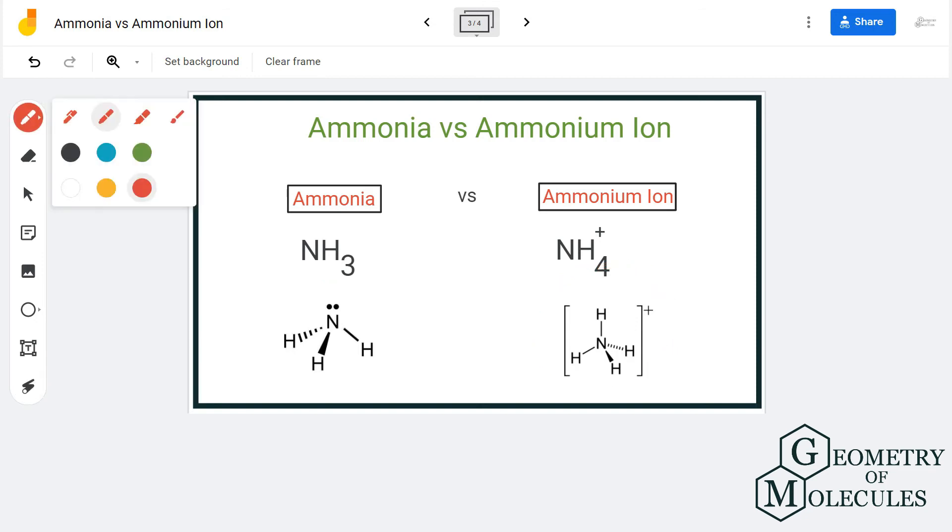and valence electrons, we're going to look at the bond angles. The bond angles will be 107 degrees for NH3. However, for NH4+, it will be 109.5 degrees. Now the difference in bond angles is due to